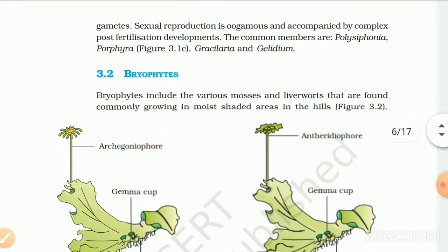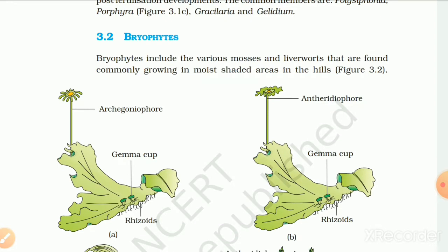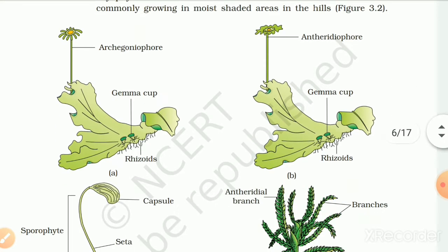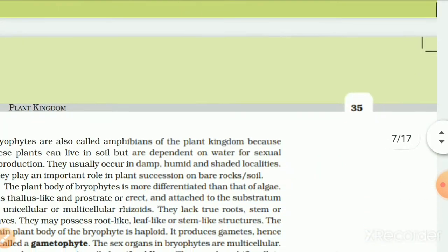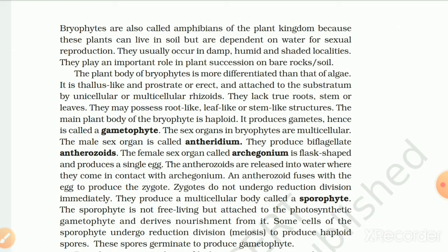3.2 Bryophytes include the various mosses and liverworts that are found commonly growing in moist shaded areas in the hills. Bryophytes are also called amphibians of the plant kingdom because these plants can live in soil but are dependent on water for sexual reproduction. They usually occur in damp, humid and shaded localities and play an important role in plant succession. The plant body of bryophytes is more differentiated than that of algae — thallus-like and prostrate or erect, attached to the substratum by unicellular or multicellular rhizoids. They lack true roots, stem and leaves but may possess root-like, leaf-like and stem-like structures.